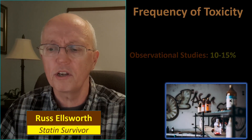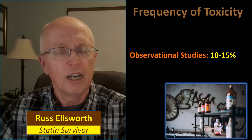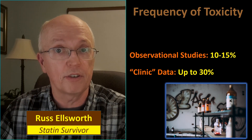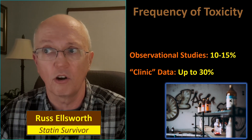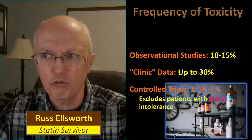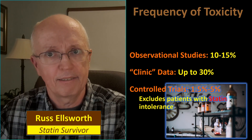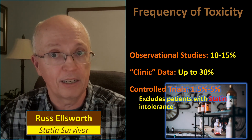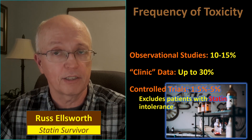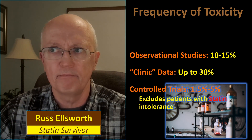So what's the frequency of toxicity? According to this paper, observational studies put it at 10 to 15% — that's one out of 10 to one out of six or seven people. Clinic data — basically out in the field, your doctor's office — puts it up to 30%, almost one out of three people. That's pretty high. And then there's controlled trials, which only report 1.5 to 5%. But these controlled trials aren't designed to detect statin intolerance or toxicity — they exclude patients with known statin intolerance, and they're usually trying to figure out the effectiveness of the statin, not the tolerability. So we can't cite those trials as a measure of statin toxicity.